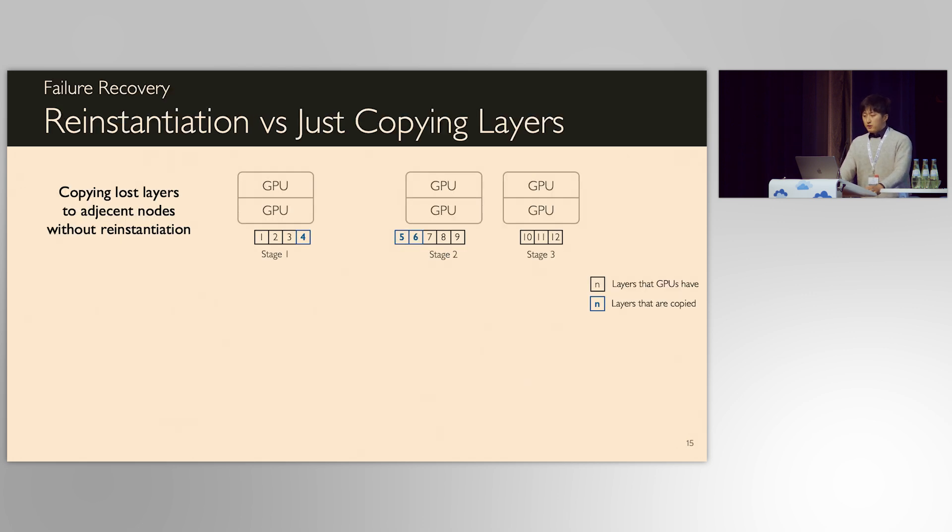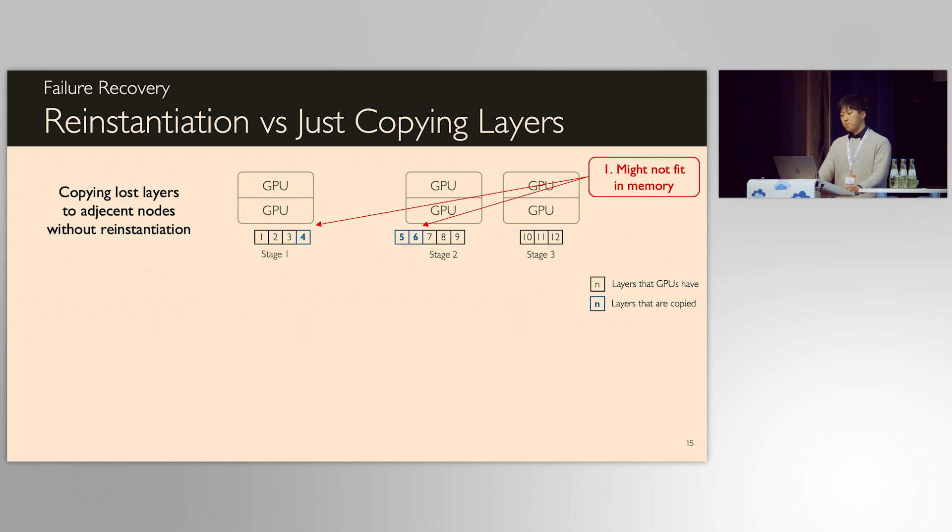Now, you might wonder, why don't we just copy layers into adjacent nodes without reinstantiation? It actually has two problems compared to the pipeline reinstantiation. First, nodes might not have enough memory to have more layers, leading to out-of-memory error during training. Second, even if they could, they now have more computations and execution speed between stages become imbalanced. The imbalanced pipeline stage execution slows down the entire pipeline due to the synchronous nature of distributed training.